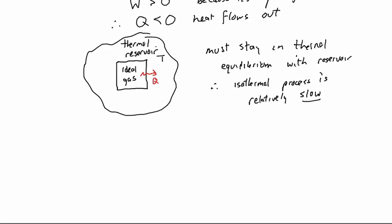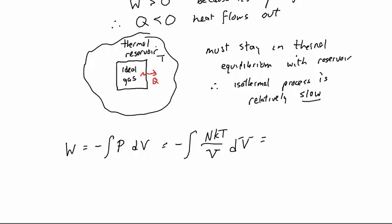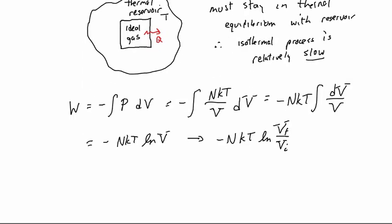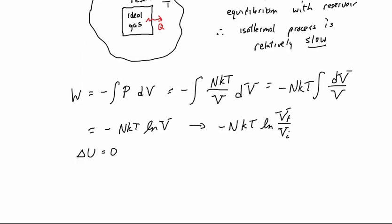The work done in an isothermal process is minus the integral of P dV. Substituting P = NkT/V, we get W equals minus NkT times the integral of dV/V, which gives W = minus NkT times ln(Vf/Vi). Since the thermal energy doesn't change, the heat equals negative the work, or Q = NkT times ln(Vf/Vi).